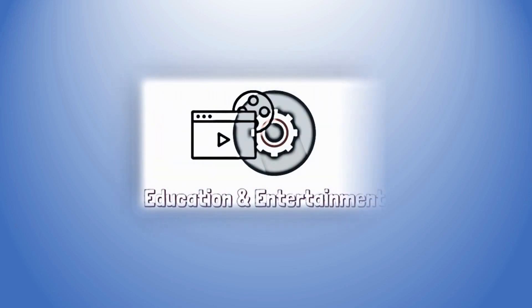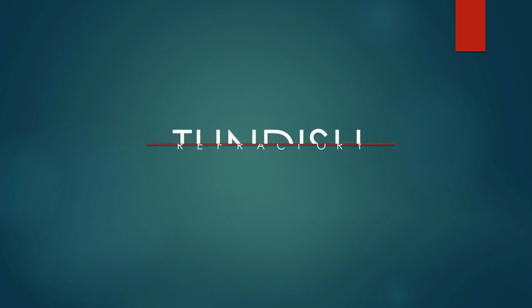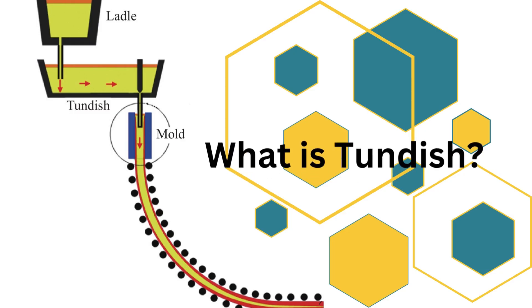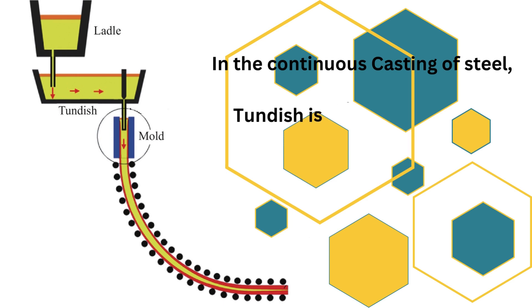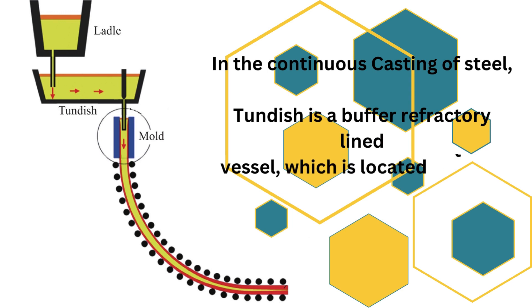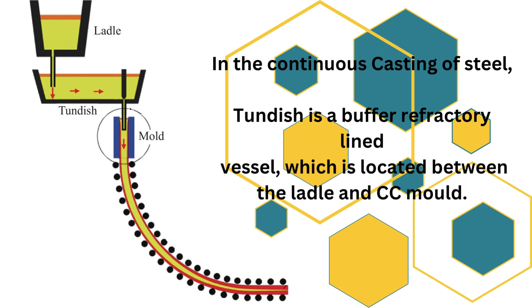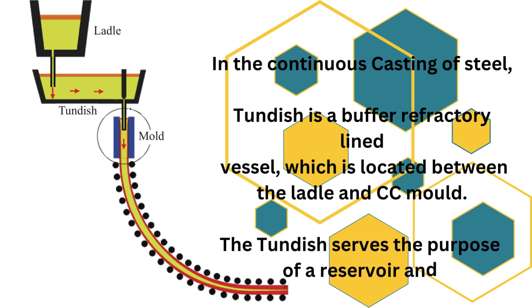Welcome to the channel. In this video, we are going to learn about the refractories used in tundish lining. Before discussing tundish refractory, let's first know what a tundish is. From the image on the left side, you can see that in the continuous casting of steel, a tundish is a buffer refractory-lined vessel located between the ladle and the continuous casting mold. The tundish serves the purpose of a reservoir and a distribution vessel.